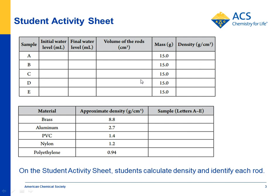In the student activity sheet, students are given two charts. The mass is the same for each rod — they're all given 15 grams. The rods are labeled A, B, C, D, and E. Students need to find the volume of each rod using the water displacement method. After doing that, they have the mass and the volume, so they can determine the density, then match it against densities given in a reference chart to determine the identity of rods A through E.